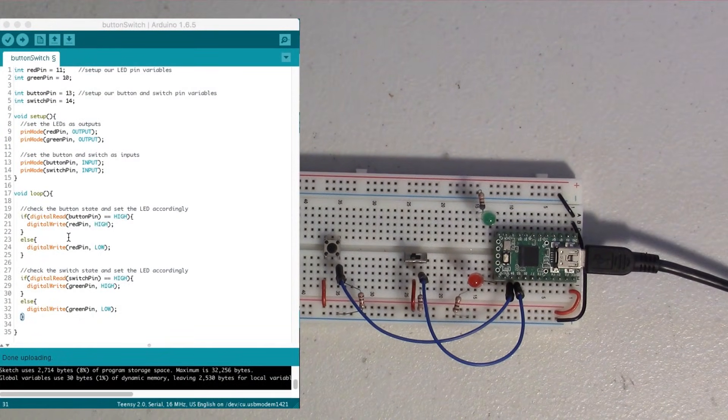Alright, so here we have the code for our buttons and switch and our LEDs. And at the top, where you can see, we define our LED pins—our red pin and green pin is 10 and 11—and we also define our button and switch pins as 13 and 14. And then in setup, we do a pinMode for red pin and green pin as outputs, and the button and switch pin are inputs.